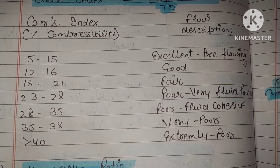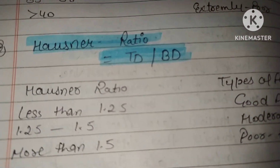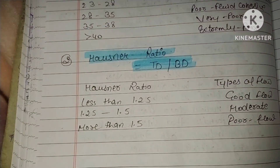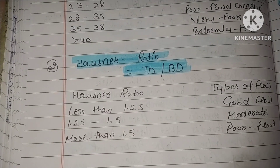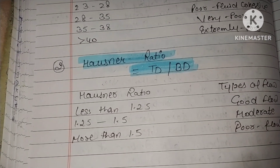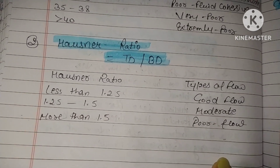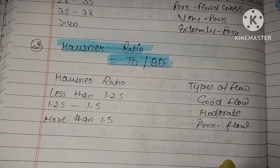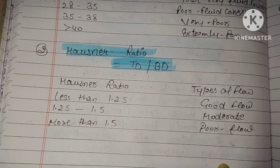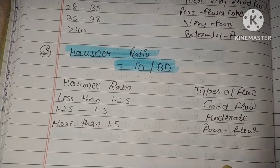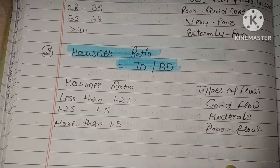Hausner Ratio is calculated as TD divided by BD (tapped density divided by bulk density). If Hausner Ratio is less than 1.25, the flow is good. If it is between 1.25 and 1.5, the flow is moderate. If it is more than 1.5, the flow is very poor.